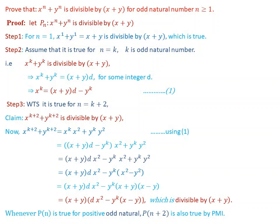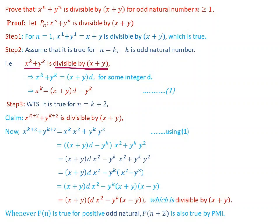Step 2: Assume that it is true for n equal to k, where k is a natural number. This means x to the power of k plus y to the power of k is divisible by x plus y.